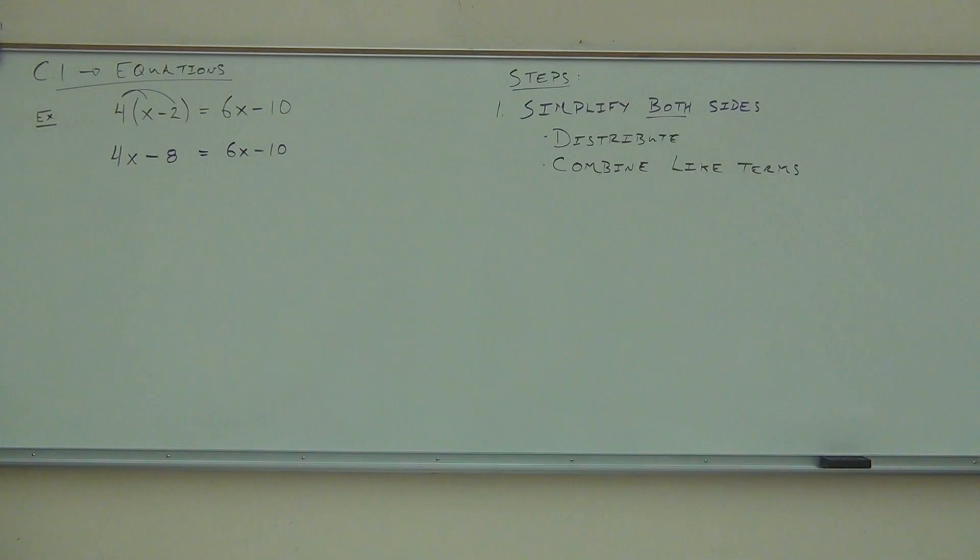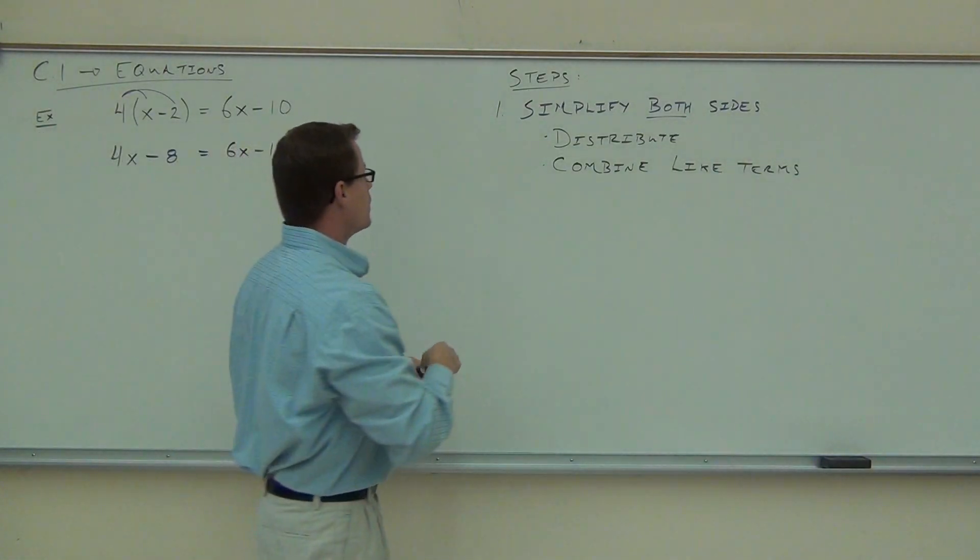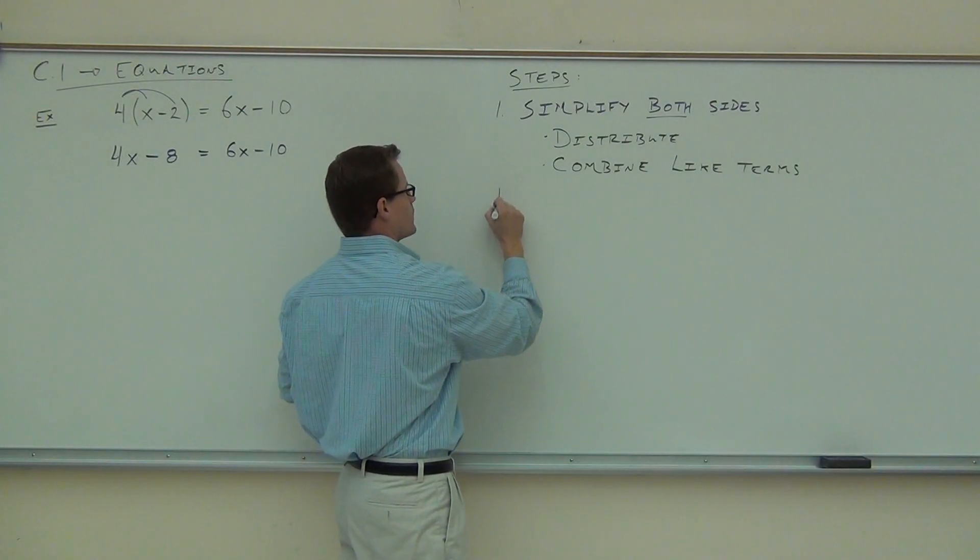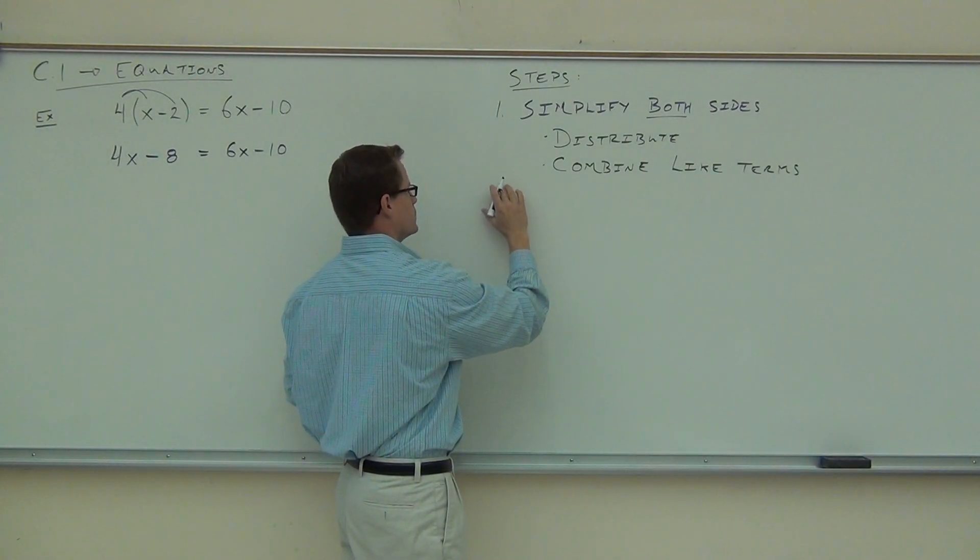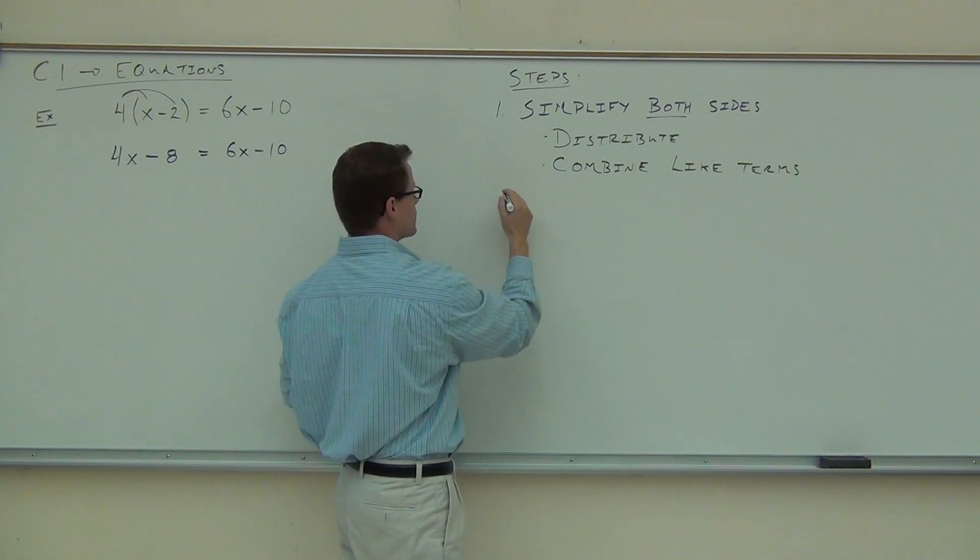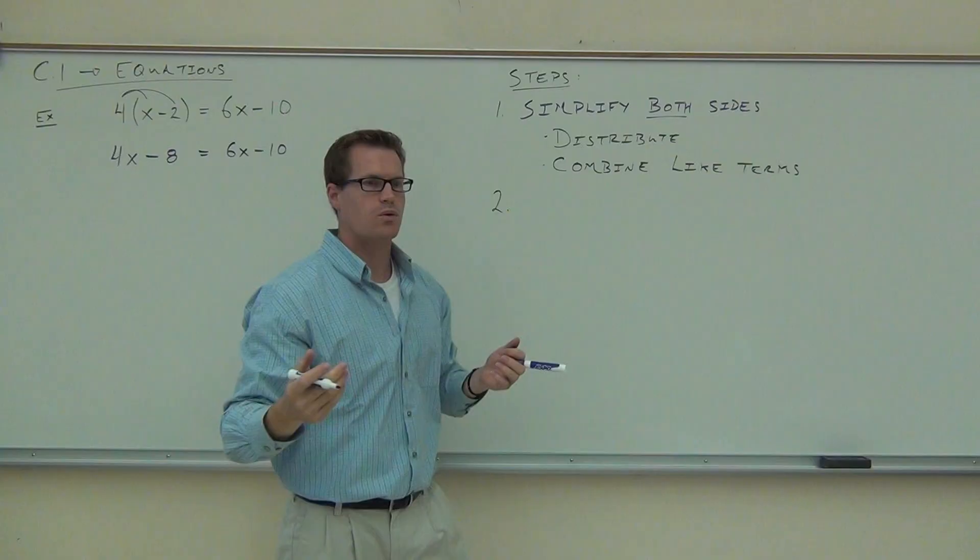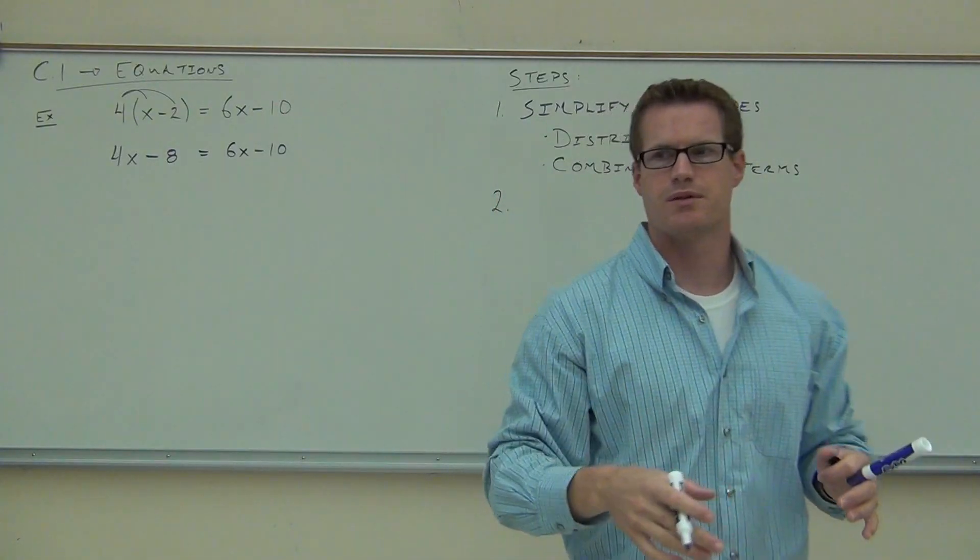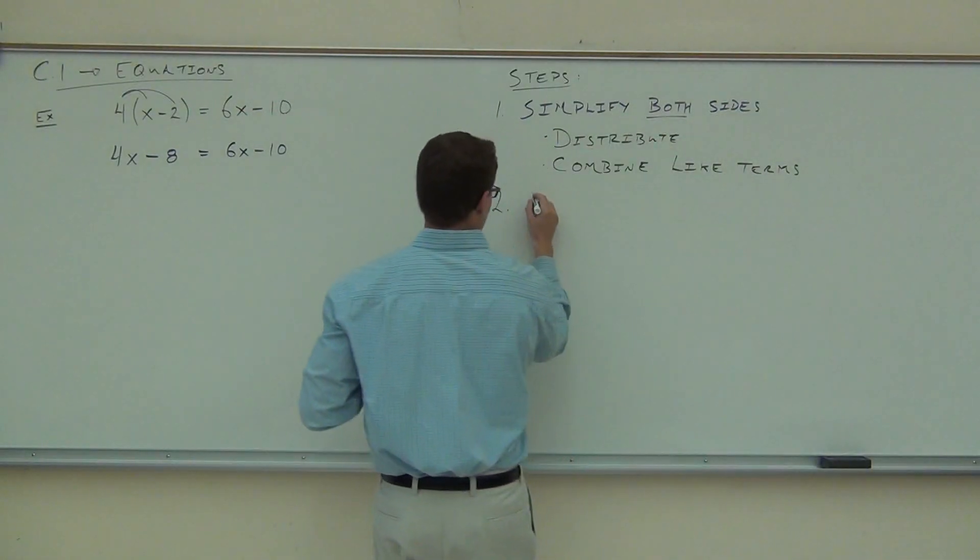So what do we do now? Would you subtract 4x from both sides? Both sides. And the idea is that what we're trying to do here is we're trying to make these like terms. And by subtracting from each side, we get this thing over here and make it a like term. So that's a great answer here. Our second step is, by the way, why do we want to move the 4x and not the 6x? So you can have a positive number. That's great. So we're really on our second step going to get rid of the smaller variable.